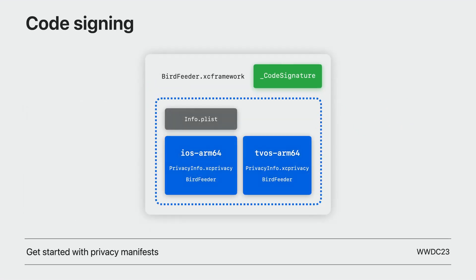A common type of dependency that you may use in your app is the XCFramework. With XCFrameworks, the signature resides within the code signature directory. The code signature protects the integrity of all the files inside your final XCFramework, including the privacy manifest files mentioned in the WWDC23 video "Get started with privacy manifests." It's possible to manually verify these code signatures for every version of every XCFramework you include within your app, but this is a time-consuming process and places a burden on you in order to get the security benefits.